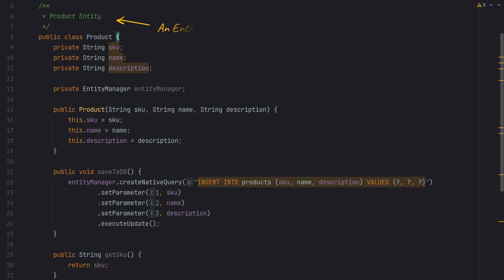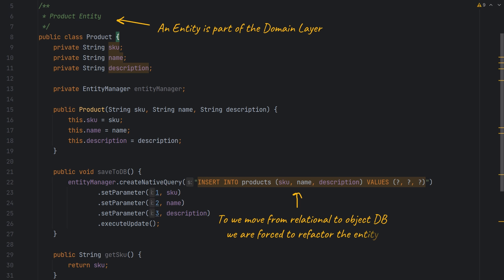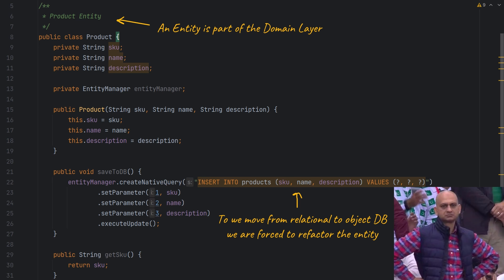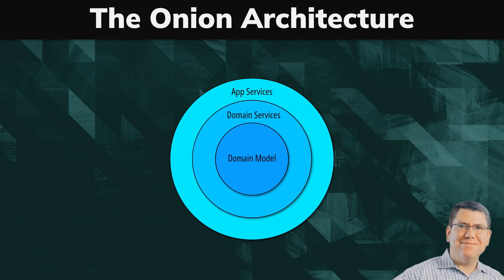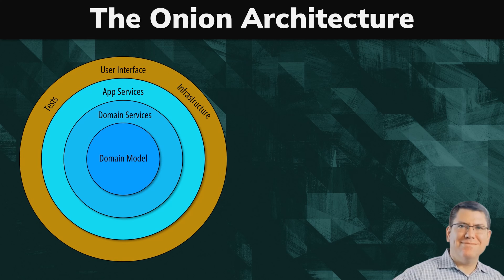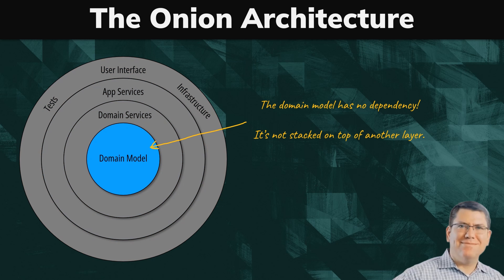Imagine we wanted to change database and move from Postgres to MongoDB. Palermo believes we should be able to do this without touching the business logic at all. Rather than stacking layers on top of each other, Palermo defines them as circles and places the domain model at the very core — because he wants to stress that the domain model should have no dependency on another layer.